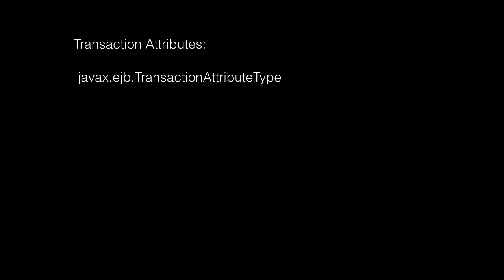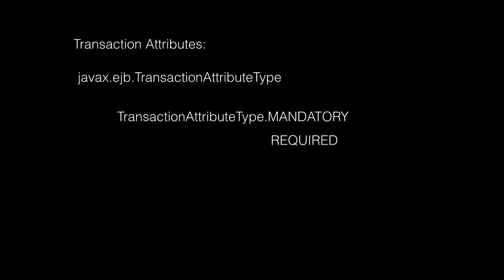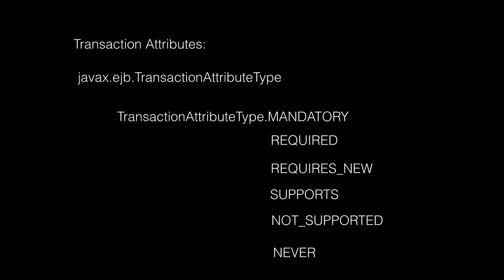Here is the TransactionAttributeType class in the EJB standard — it's an enumeration. It provides us different values like mandatory, required, requires new, supports, not supported, and never. We can mark our classes and methods with the transaction attribute annotation and give these values to tell the container how we want to manage the transaction.